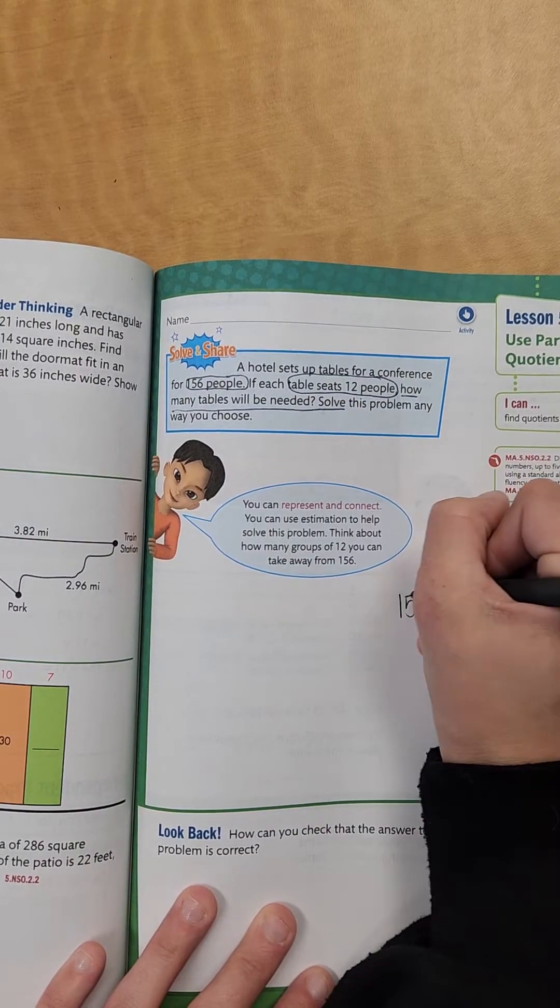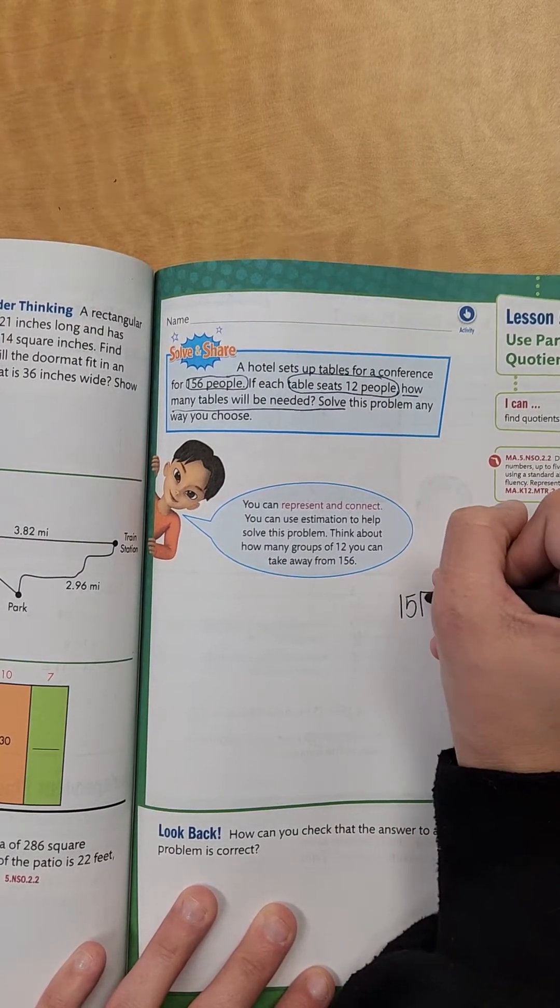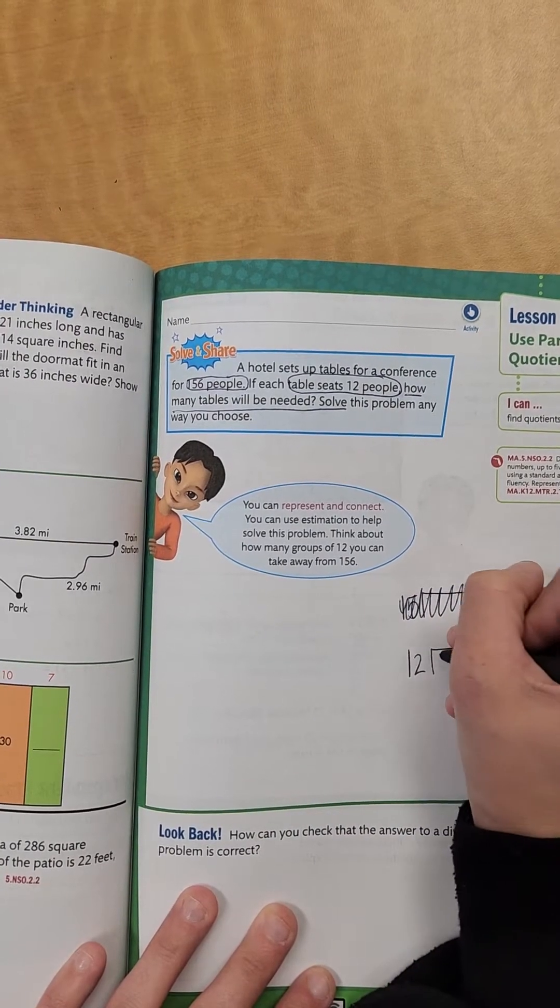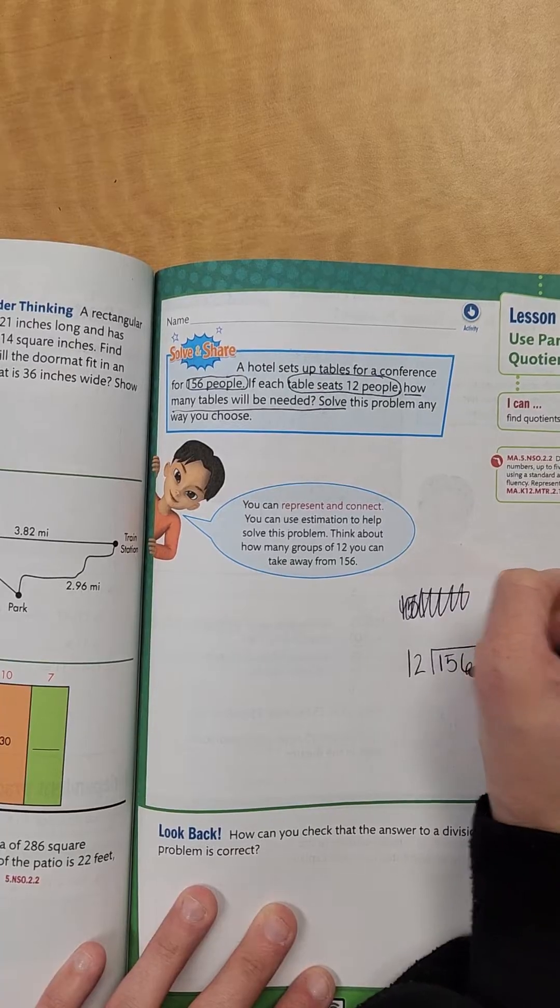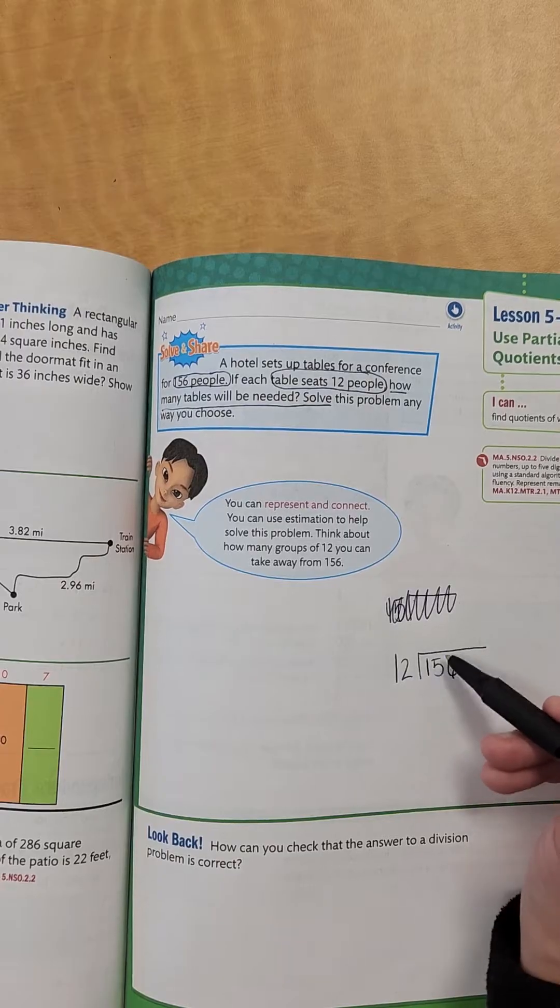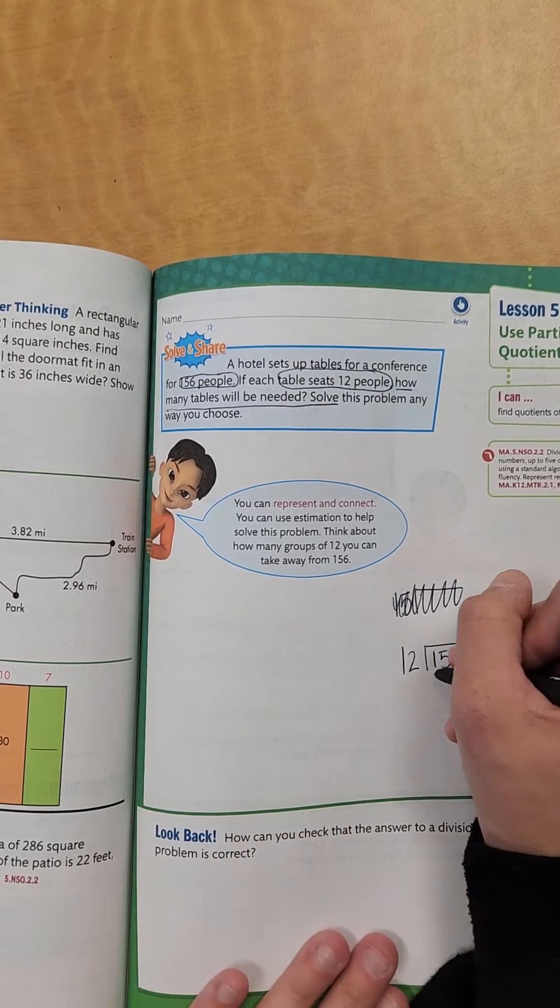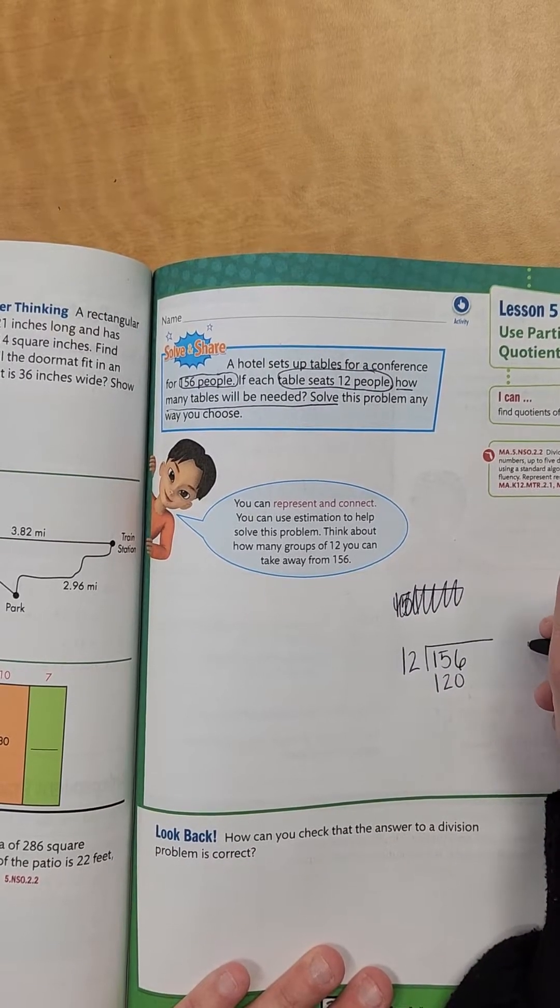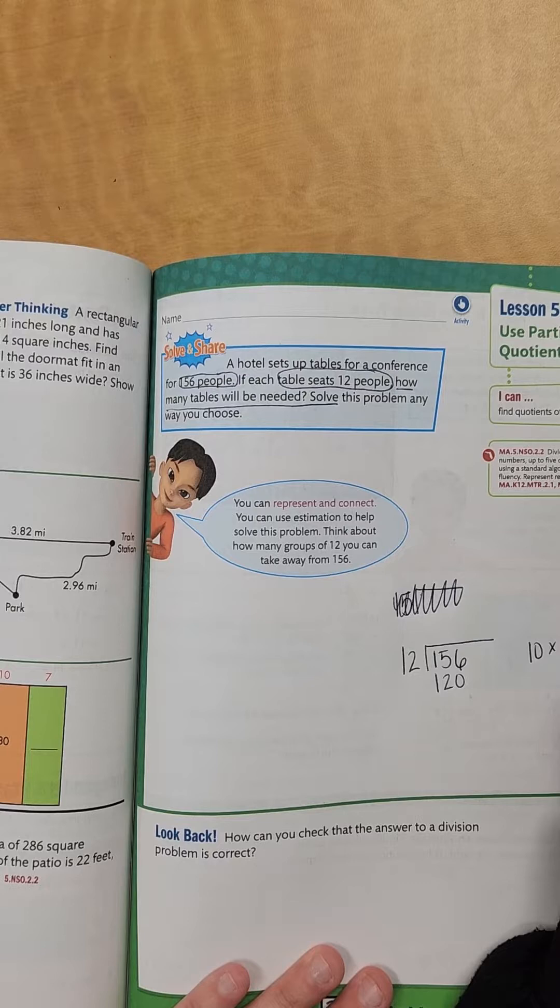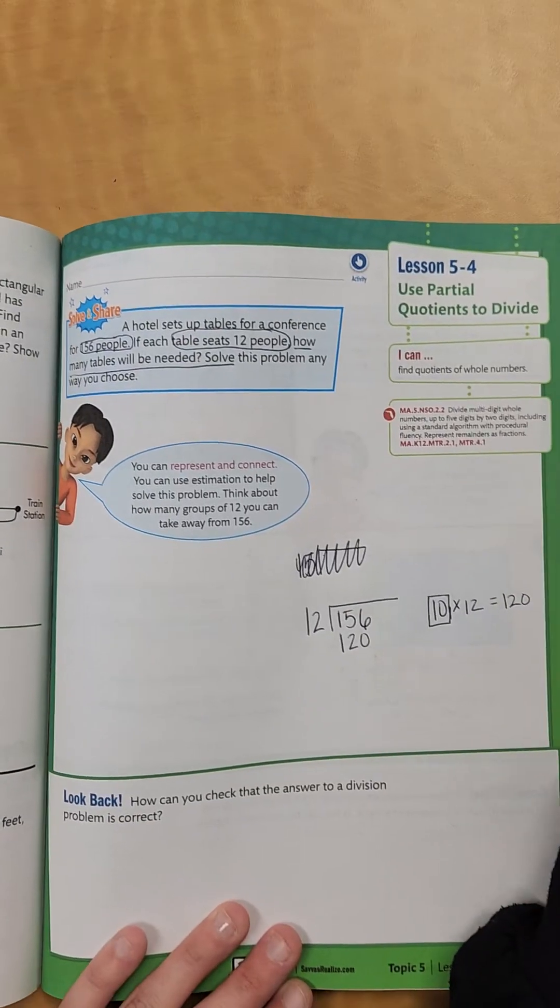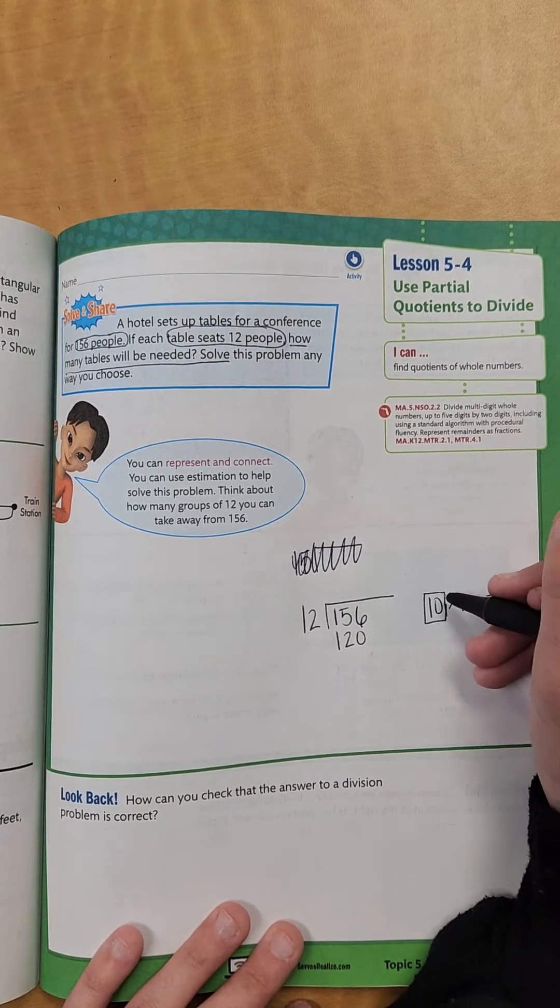So we're going to do 12 going into 156. Now just like we did the last time, can I multiply 12 by 10 and give me something that's less than this? Yes, that's going to give me 120. So we're going to have 10 times 12 equals 120. So I'm going to put a box around my 10. That way I can see I've got to add this up at the end.